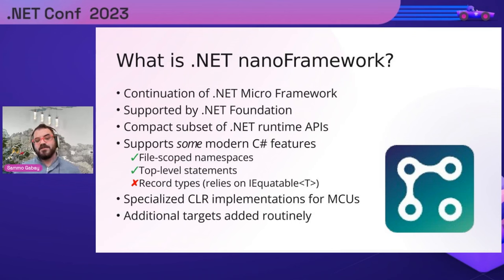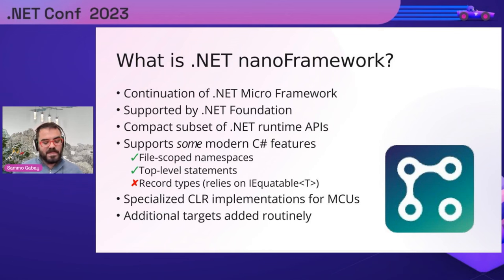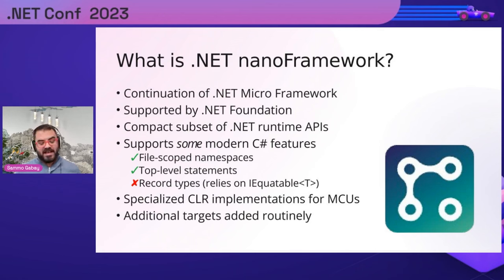Because it still uses Roslyn to compile your code into MSIL, you can use some modern C# features — as long as they don't depend on framework types not part of Nano Framework. For example, you can use file-scoped namespaces and top-level statements, but you can't use record types because record types rely on IEquatable<T>, which isn't present in Nano Framework. The community is constantly adding additional CLR implementation targets for specific boards.